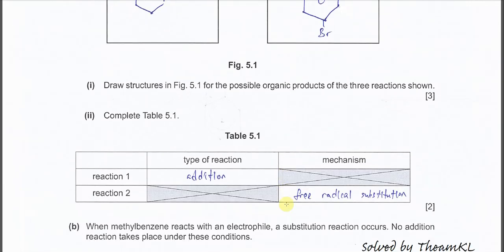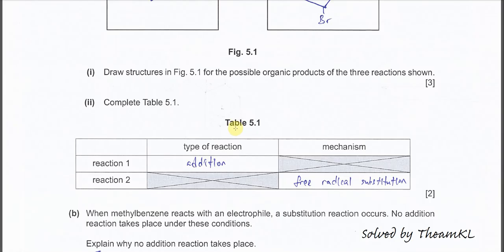For part two, completing table 5.1: the type of reaction for reaction one is addition — even though it's called hydrogenation, the type is still addition. For reaction two, the type is free radical substitution, which is the name of the mechanism.